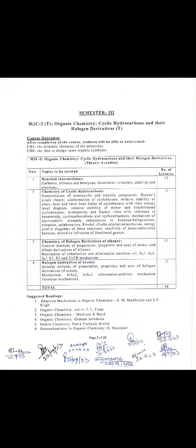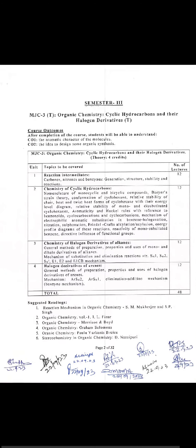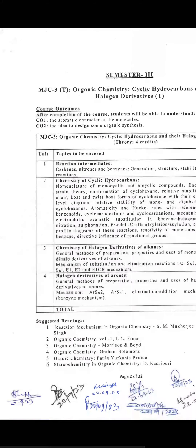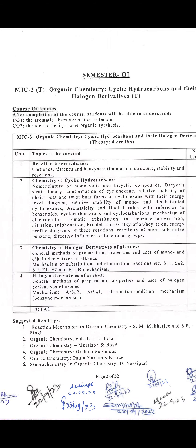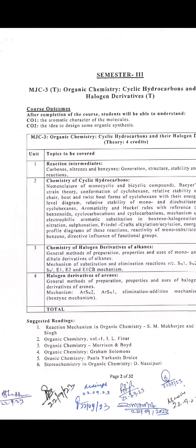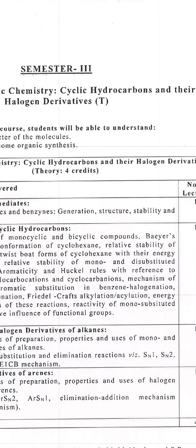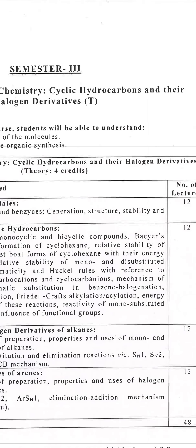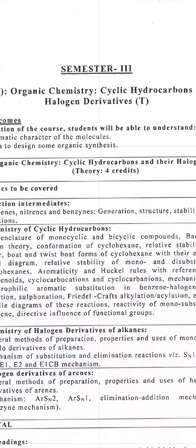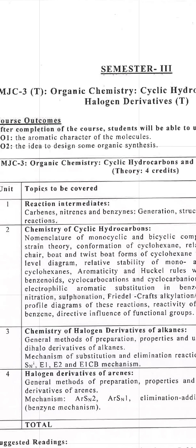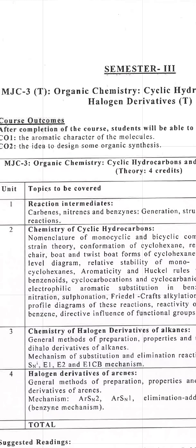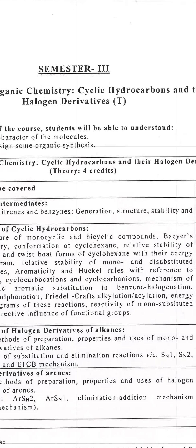Hello students, welcome to semester 3. In semester 3, we have organic chemistry: cyclic hydrocarbons and their halogen derivatives. Your MGC major 3, QD paper — organic chemistry, cyclic hydrocarbons and their halogen derivatives.